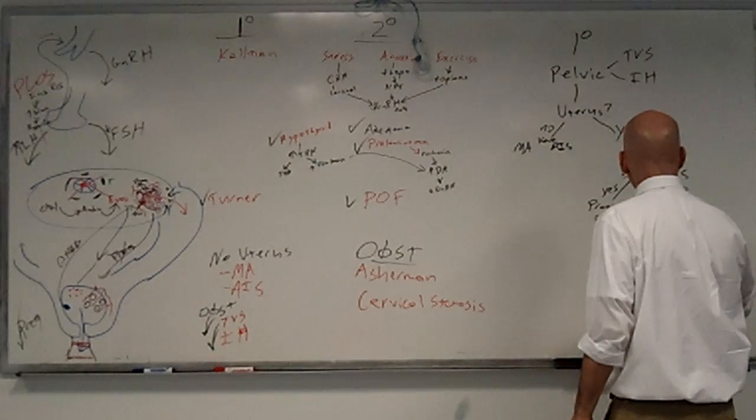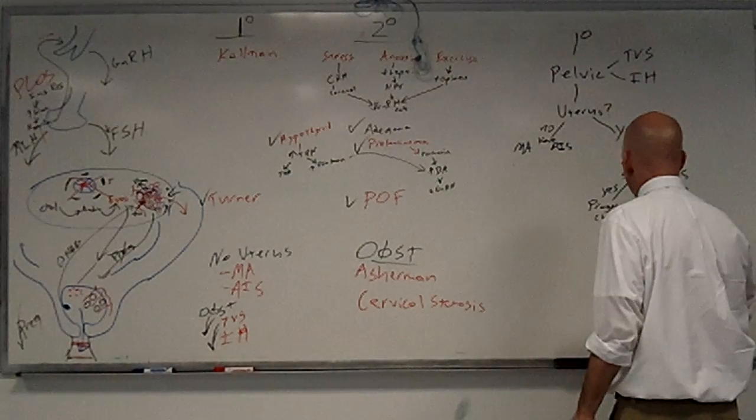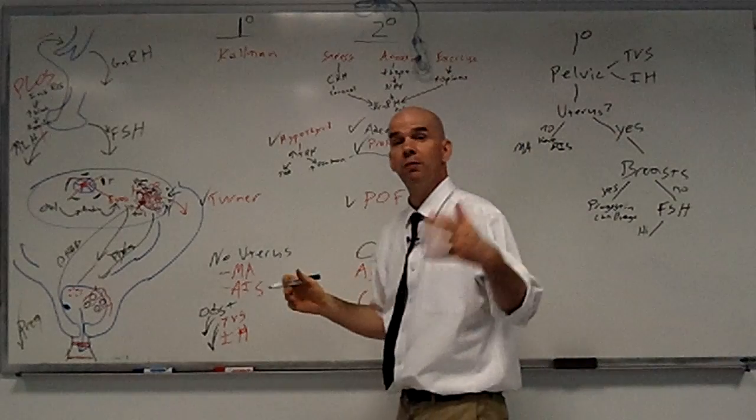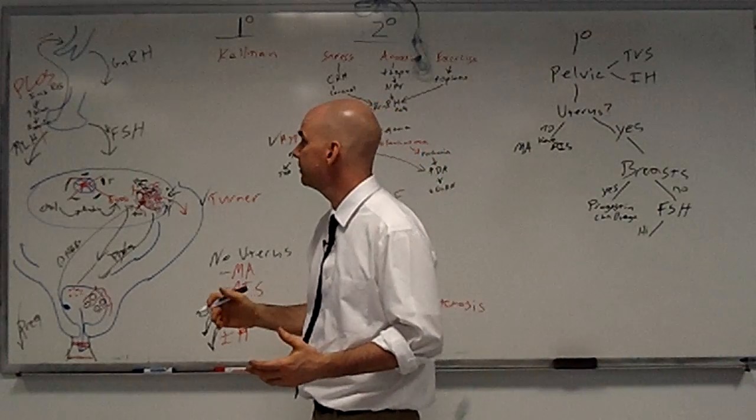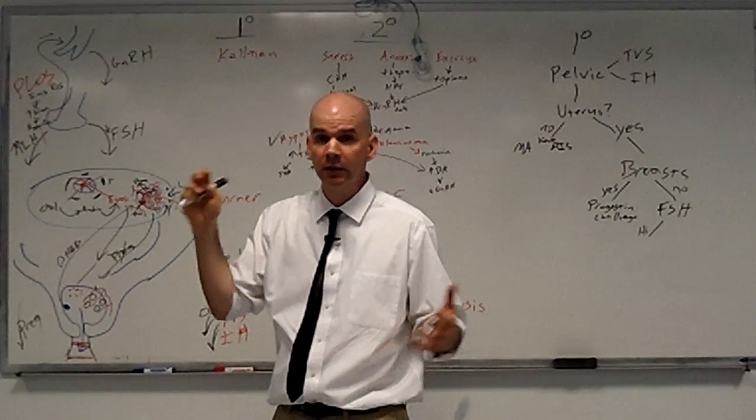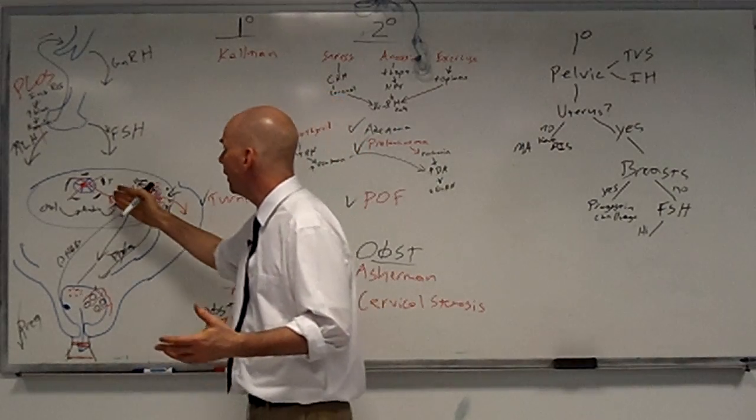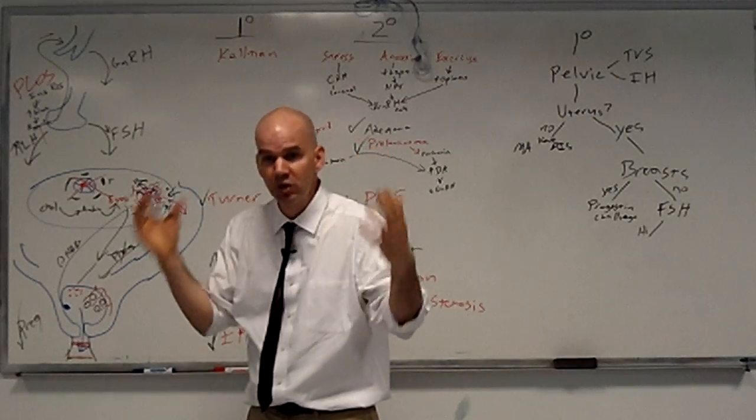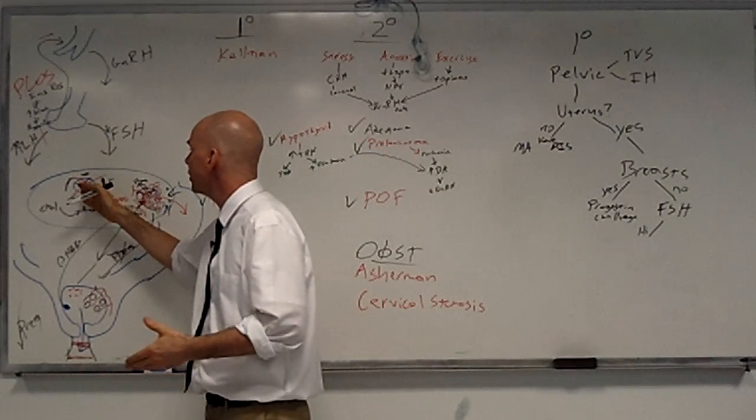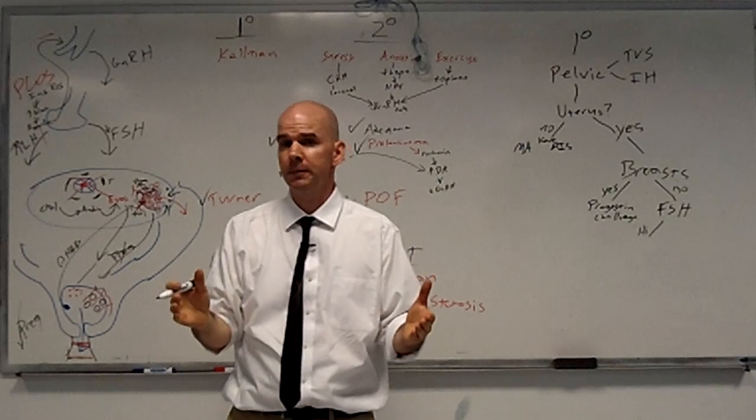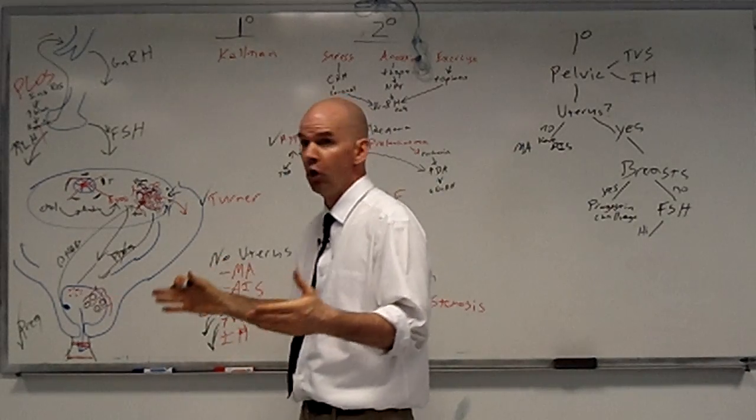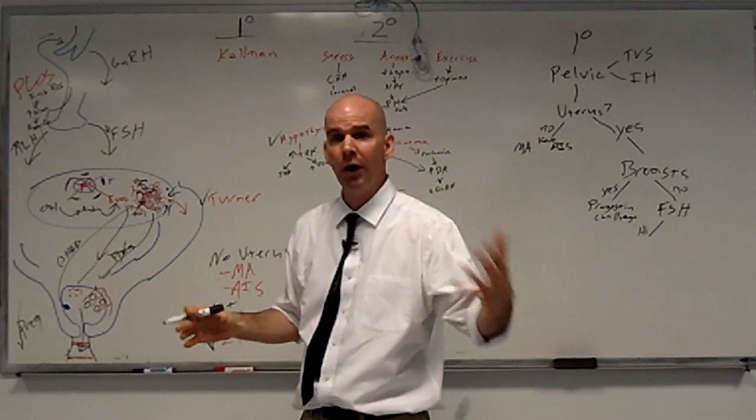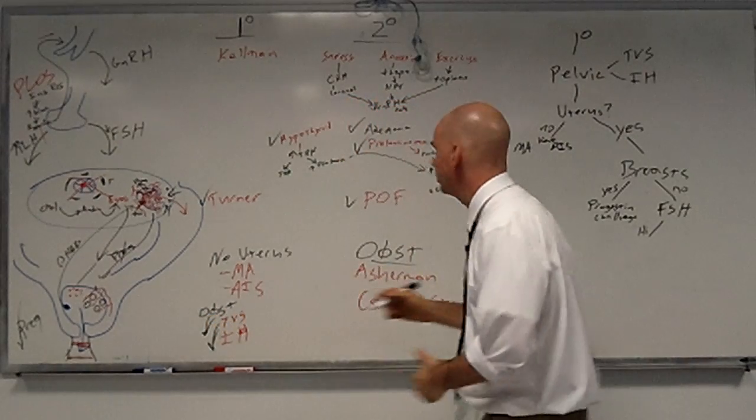If the FSH is high, then you know that the problem has to be with the ovaries because FSH is knocking loud and clear, but the follicles aren't answering. They're not responding with the production of estrogen. So there are no follicles, probably no ovaries, probably what you're looking at is Turner.